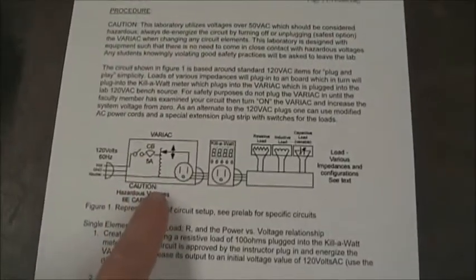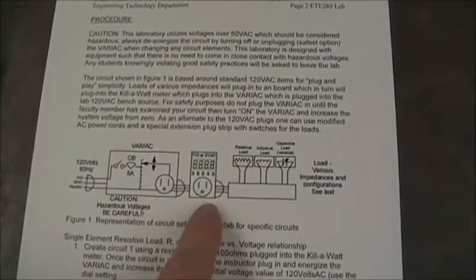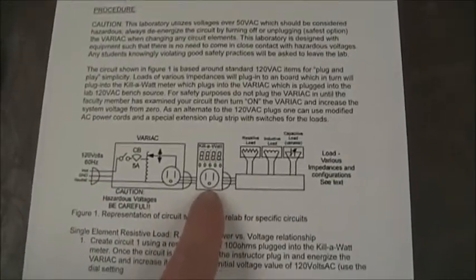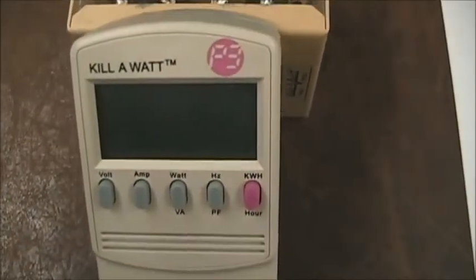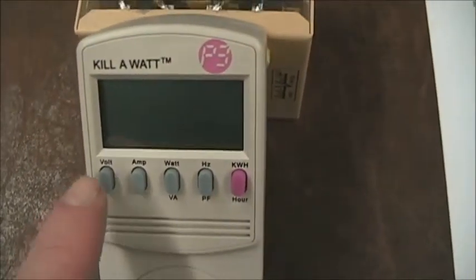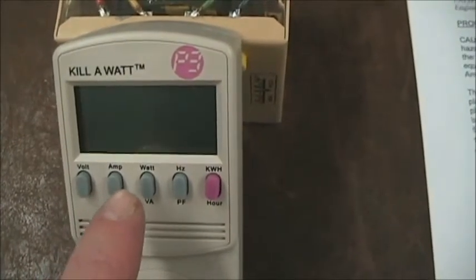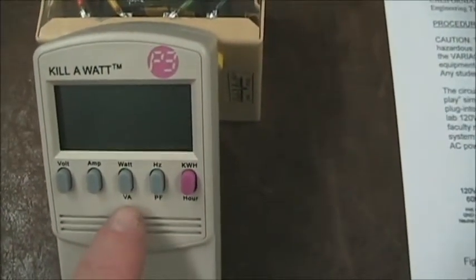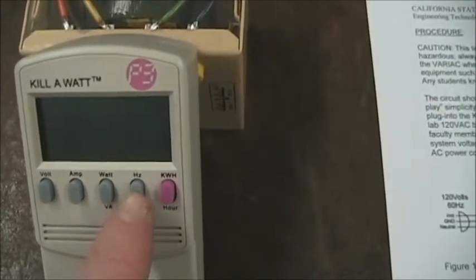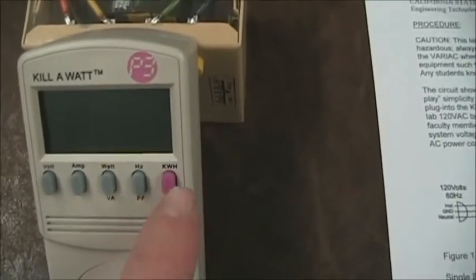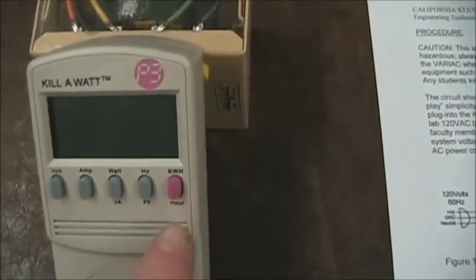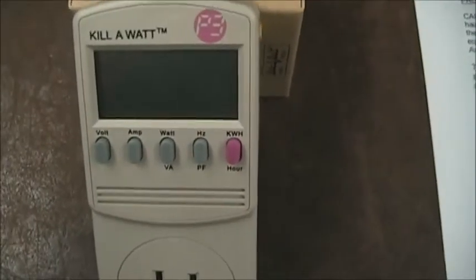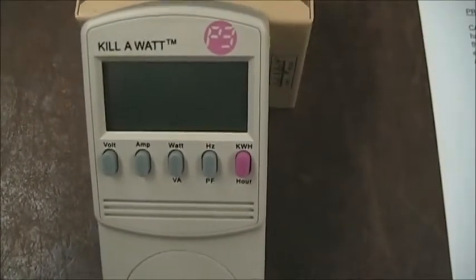Along with the variac, another new piece of equipment is the single-phase watt meter. In this lab, we will be using a low-cost kilowatt meter, which can measure voltage, amps, wattage, volt amps, frequency, and power factor. It also includes time functions of kilowatt hours and hours, but we will not be using those last two functions.